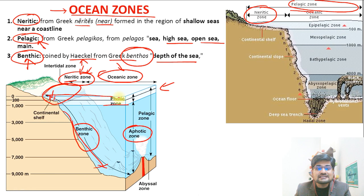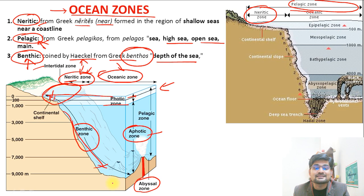So these are the terminologies we must understand: neritic, pelagic, benthic, photic, and aphotic. All these words are very important. And the base zone we already know is the abyssal zone — that is the base.